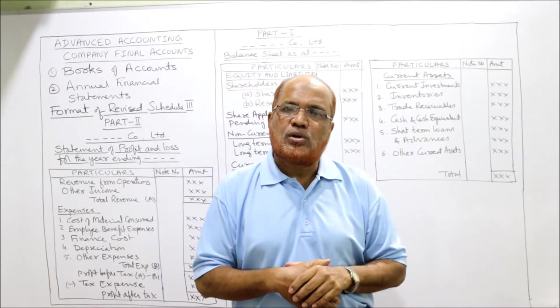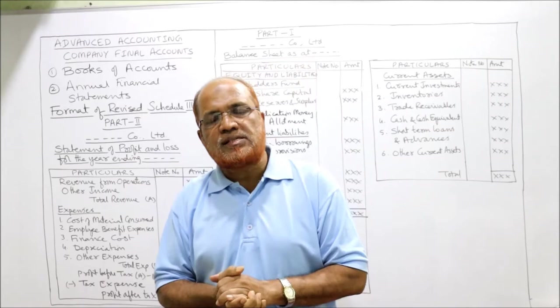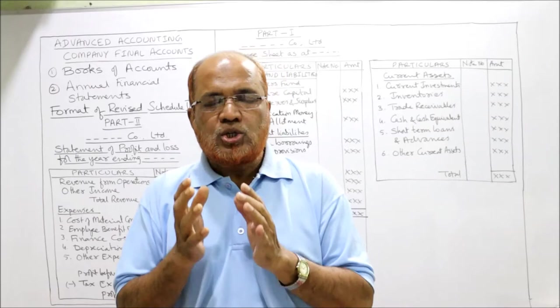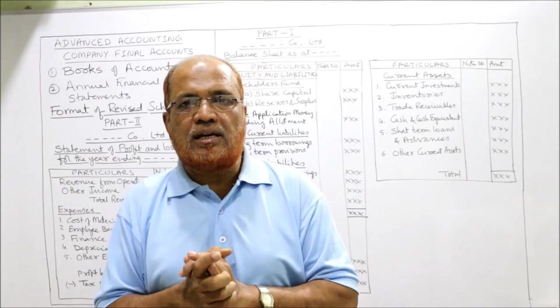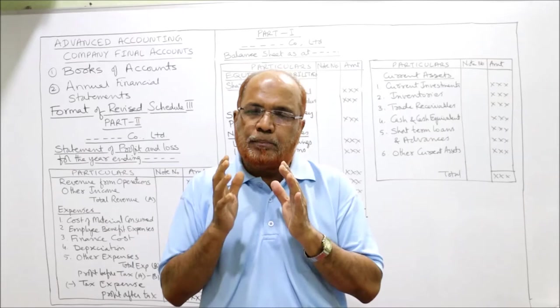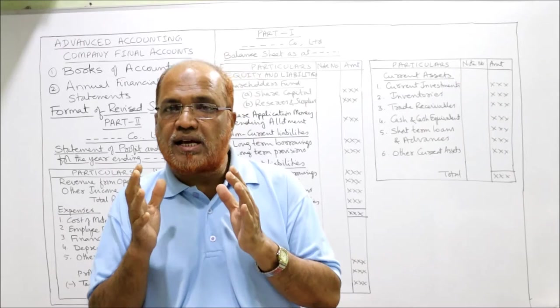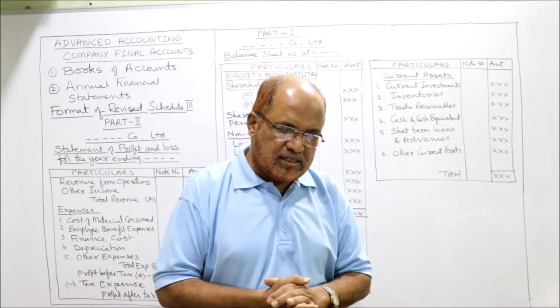The final accounts of a joint stock company consist of two basic financial statements: the statement of profit and loss, and the balance sheet. Section 129 of the Companies Act 2013 says every company should lay the financial statements before the annual general meeting, and every financial statement shall give a true and fair view of the state of affairs of the company. While preparing financial statements, one should keep in mind the provisions of Schedule 3 of the Companies Act, the accounting standards given by ICAI, and the related statements and guidance notes.